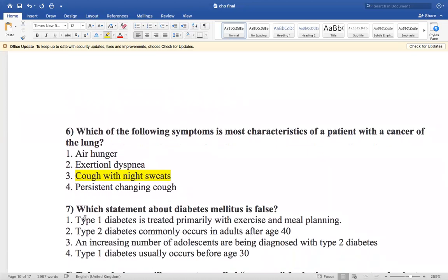Now the next question is: which statement about diabetes mellitus is false? Type 1 diabetes is treated primarily with exercise and meal time. Type 2 diabetes commonly occurs in adults after age 40. And increasing number of adolescents are being diagnosed with type 2 diabetes. And type 1 diabetes usually occurs before the age of 30.